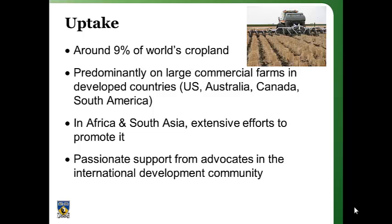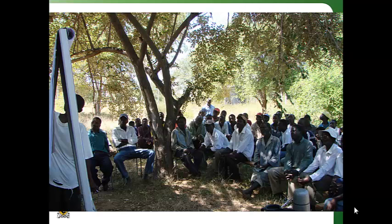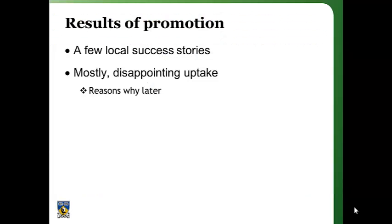In Africa and South Asia, there have been extensive efforts to promote conservation agriculture, with strong support from advocates in the international development community using all the tools in the agricultural extension toolbox — such as on-farm trials, demonstration plots, and farmer meetings. But the results of that promotion have been disappointing. There are a few local success stories, but mostly the level of uptake has been relatively disappointing.